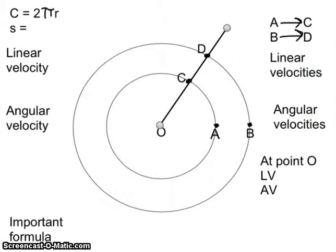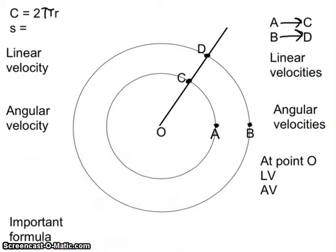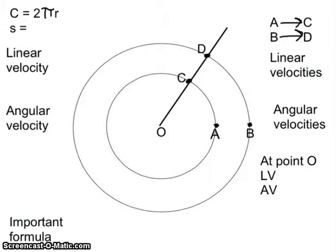Now I want you to notice what happened here. I want to get a red pen. Notice that as we traveled, A rotated to C and B rotated to D.